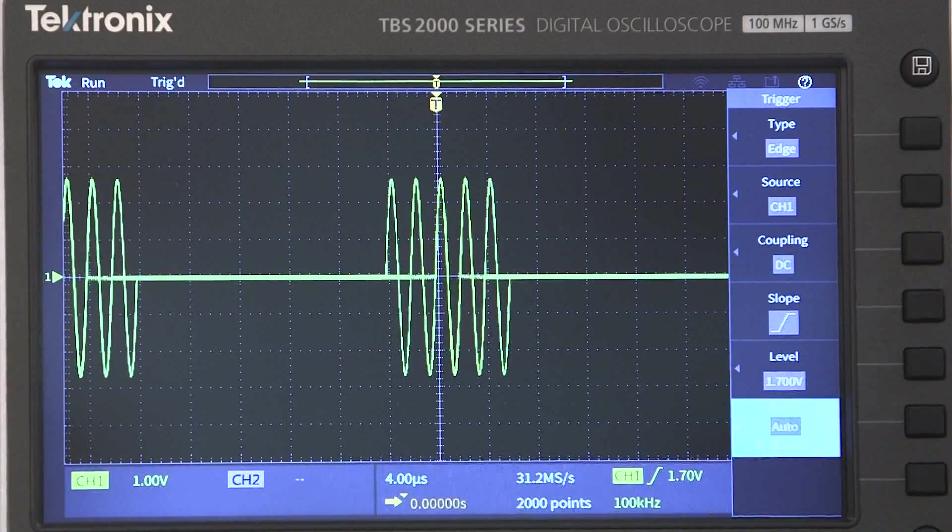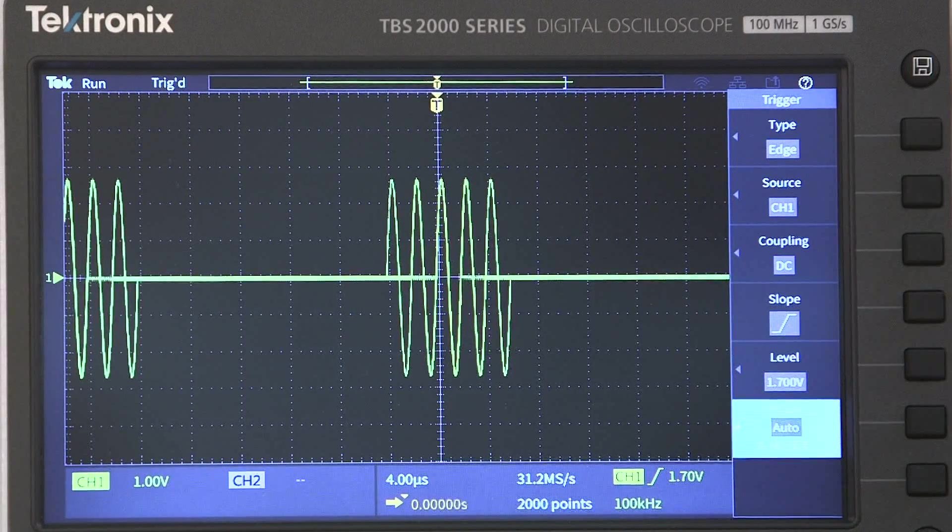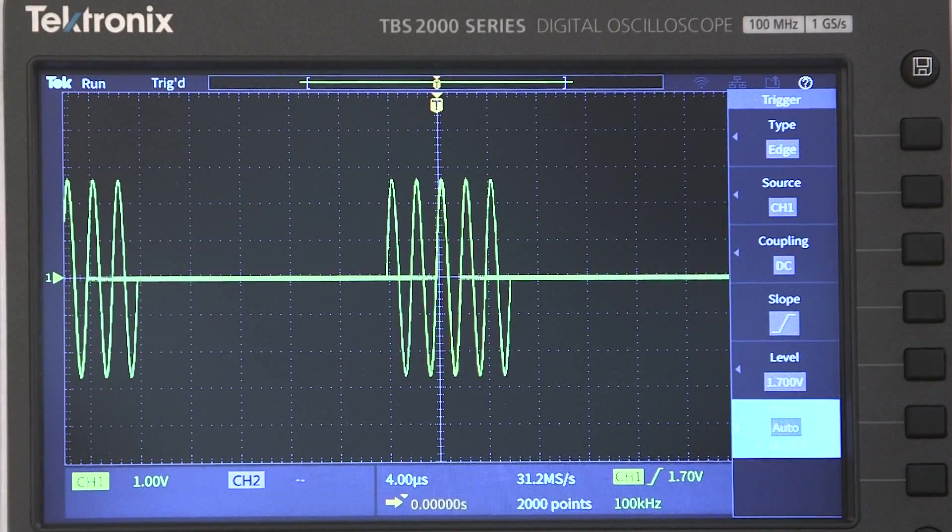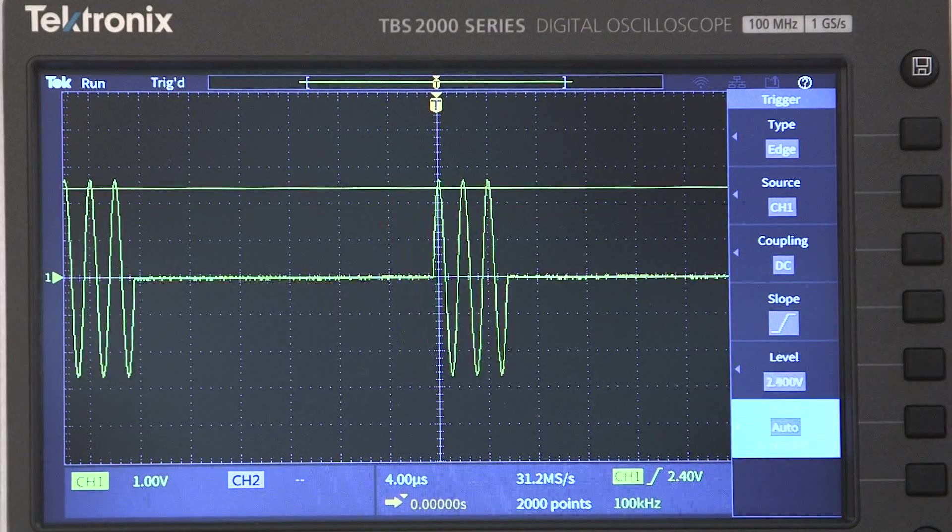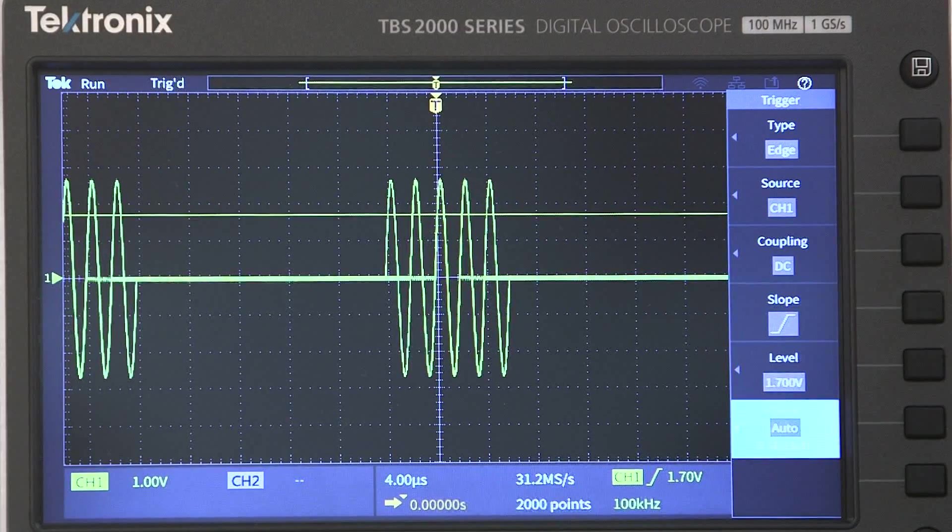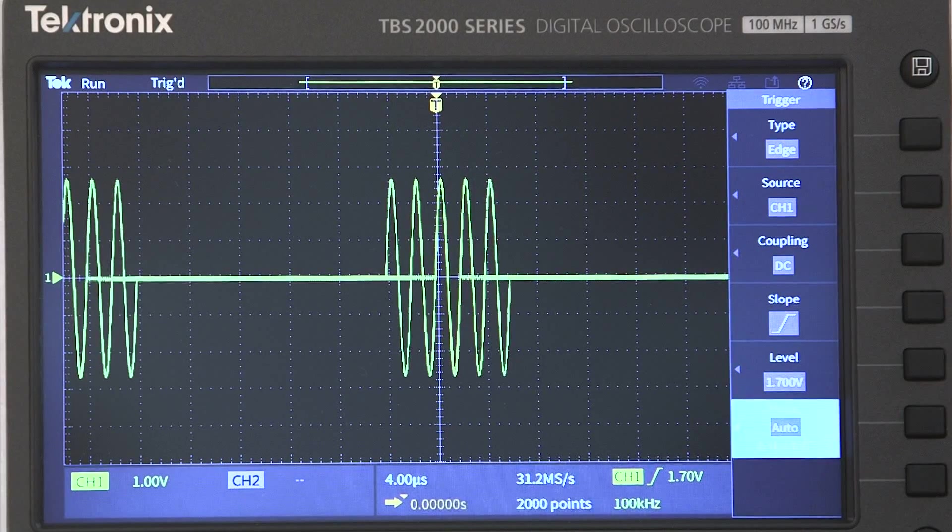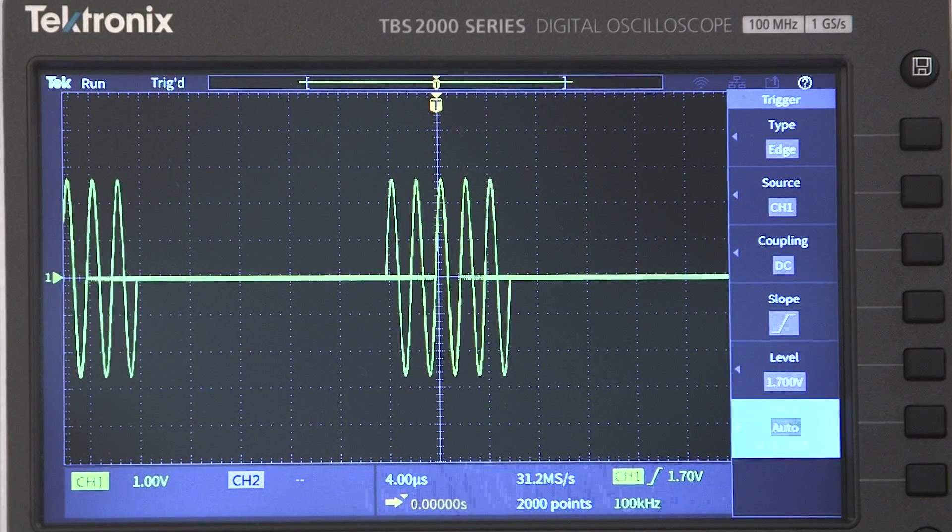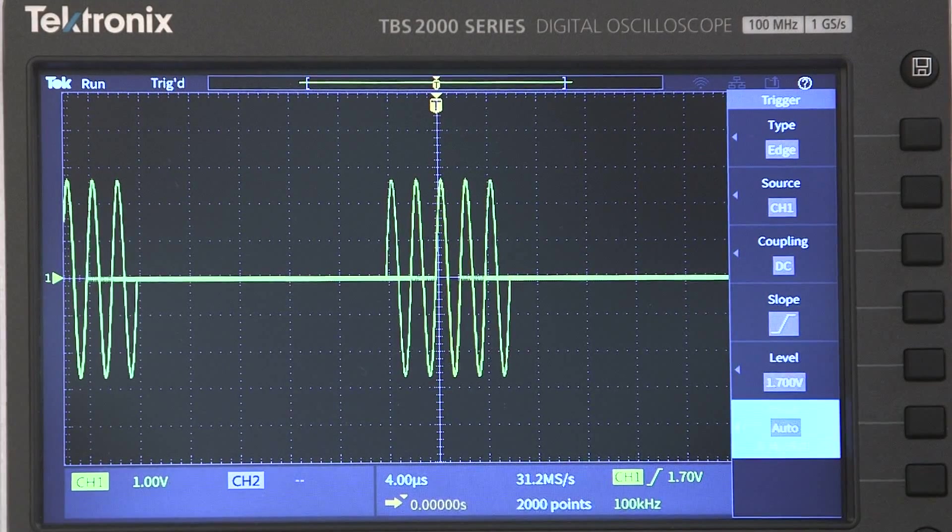There's just one more control to talk about, trigger mode. It's a good one to know. Auto is the default trigger mode. In this mode, the scope waits for a trigger, and if it doesn't see one, it captures and displays a waveform even if the trigger conditions aren't being met. Auto mode shows waveforms that aren't synchronized, but it's really useful for setting up the trigger. For signals that meet the trigger conditions pretty often, auto mode will give you a stable trigger.